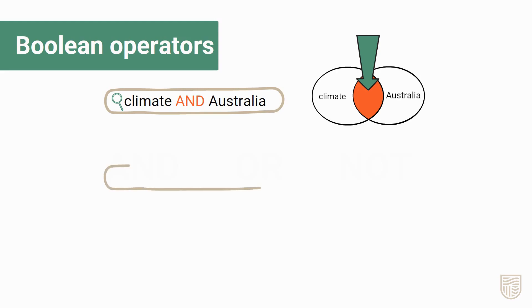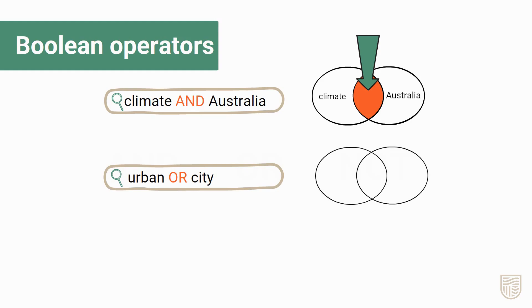Use OR to broaden your search to include results that contain any or all your keywords. This is especially useful for synonyms. In this example, we're looking at urban or city, which means you'll get results that contain urban, city, or both urban and city. You can include as many synonyms as you need.